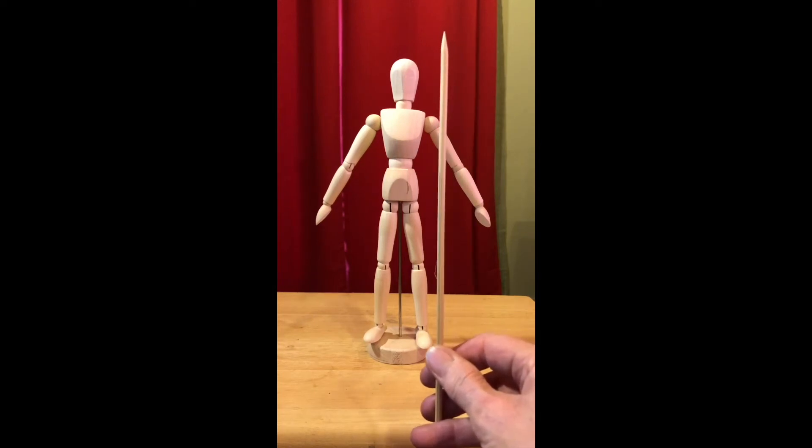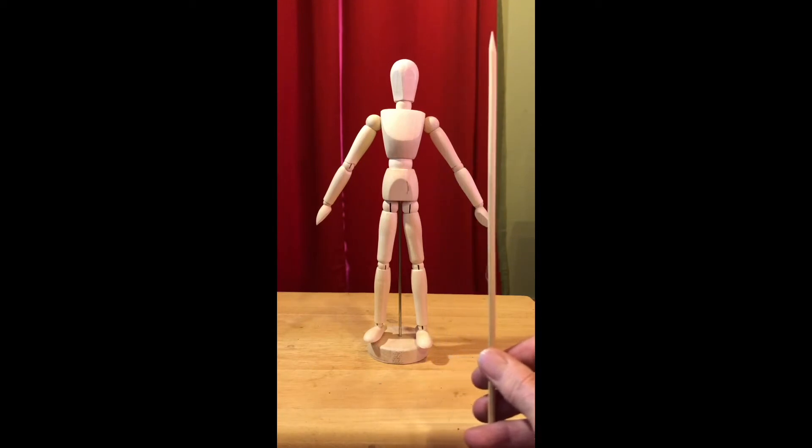Angle finding has to do with comparing angles to the horizontal and vertical. Right now I have my stick in a vertical position. I could also put my stick in a horizontal position.